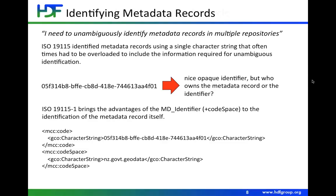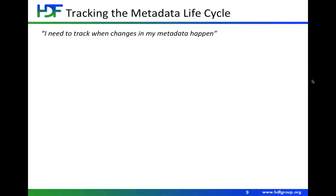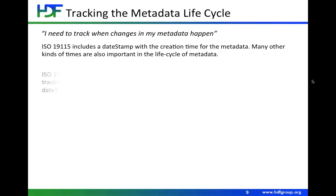Tracking the metadata lifecycle is an important thing. Metadata evolves along with improved understanding of datasets and improved additions to the metadata. In 19115, there was a single date stamp, which was the creation time for the metadata — that was the only kind of date you could associate with the metadata. In 19115-1, it allows you to include any number of CI date objects for the metadata, and those CI date objects include date types so you can track the metadata throughout its lifecycle.